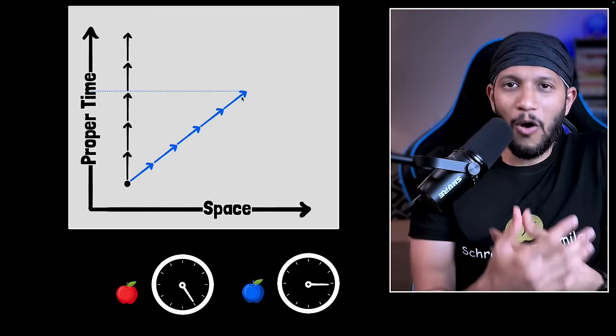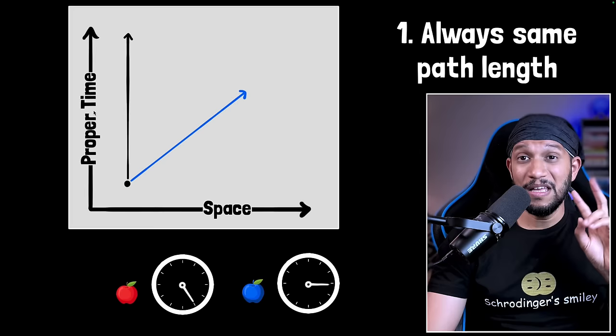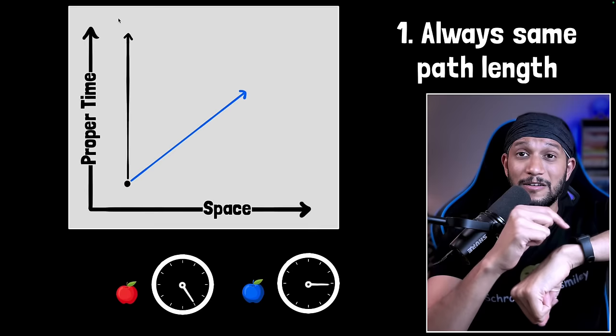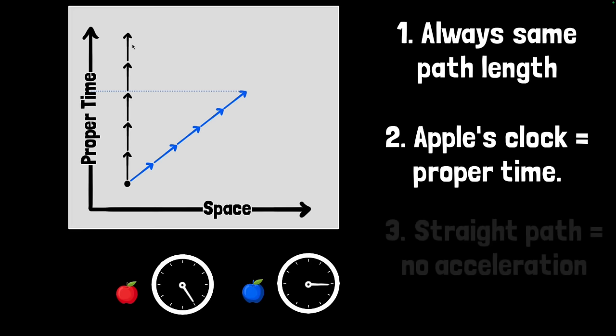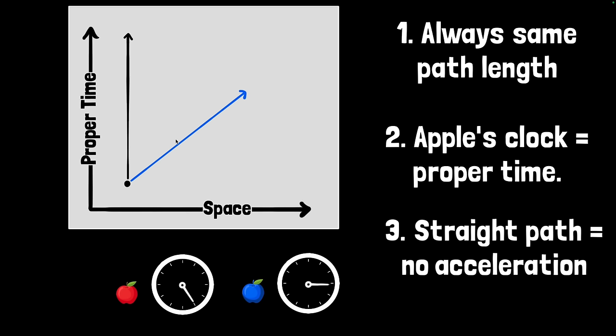But there are three important things that we need to understand from this, three important features. The first is that this length and this length will obviously be the same, which means the path length in this spacetime diagram will always stay the same. The second thing is that that path length represents how much time has ticked in our clock. To understand how much time has ticked in their clock, their proper time, you need to look at this axis. And third, if the paths are a straight line, that means the velocity has remained the same direction, which means it's not accelerating. So straight lines are non-accelerating paths or inertial paths, which means if something is accelerating, it would be curved. That's how we would know it's accelerating or not.